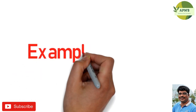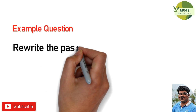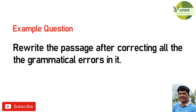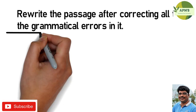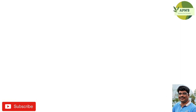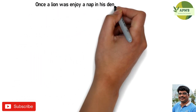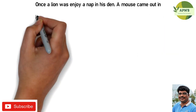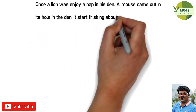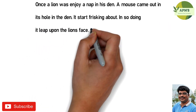Now let us take an example question. The instruction given in the question is: rewrite the passage after correcting all the grammatical errors in it. The passage given in the current question is as follows: 'Once a lion was enjoy a nap in his den, a mouse came out in its hole in the den. It start frisking about. In so doing it leap upon the lion's face.'